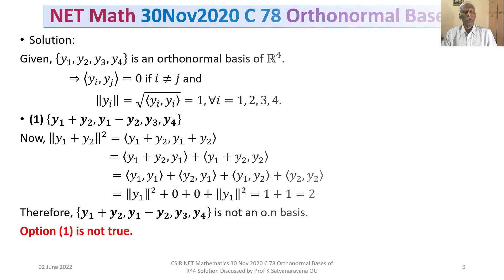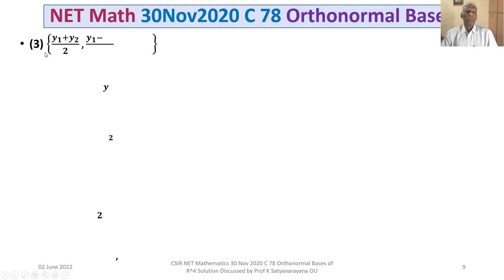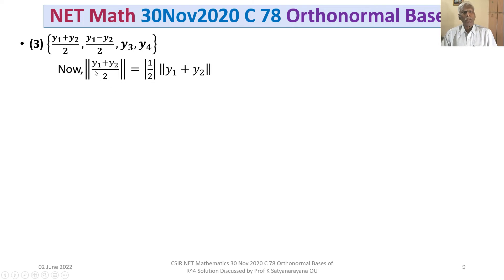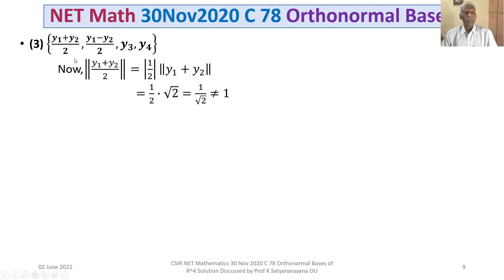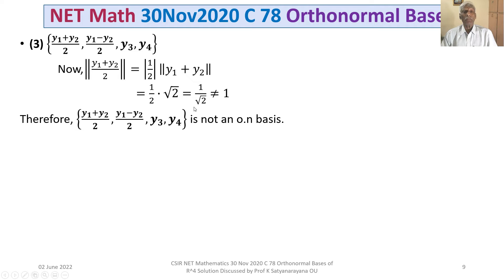The next option we consider is Option 3: the set {(y1 plus y2)/2, (y1 minus y2)/2, y3, y4}. Let us take the norm of the first vector. Using norm(alpha·x) equals mod(alpha) times norm(x), we get mod(1/2) times norm(y1 plus y2). That is 1/2 times root 2, which equals 1 over root 2, which is not equal to 1. Therefore these vectors do not form an orthonormal set, and Option 3 is not an orthonormal basis. Option 3 is not true.